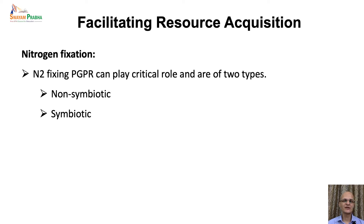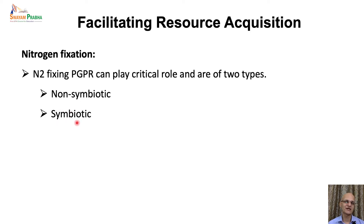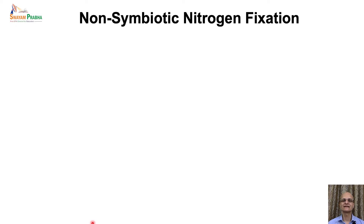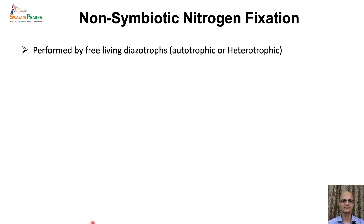Depending upon the type of interactions between plants and nitrogen-fixing microbes, these interactions can be categorized into two types: non-symbiotic association and symbiotic association. Non-symbiotic nitrogen fixation is performed by free-living soil bacteria — the free-living diazotrophs. These may be autotrophic or heterotrophic type and they do not make any symbiotic relationship with the plants. These microbes can fix atmospheric nitrogen gas into a more usable form — that is, ammonia.